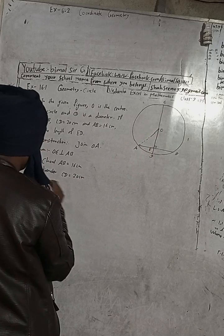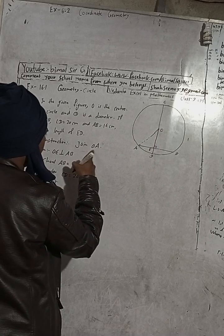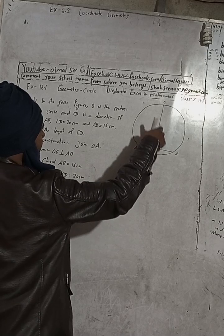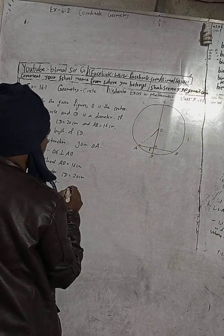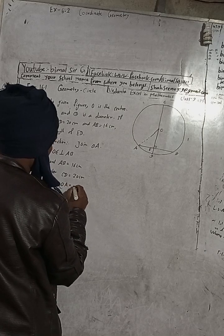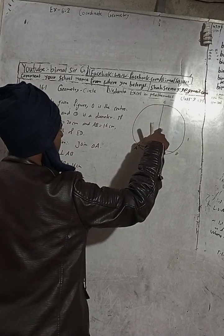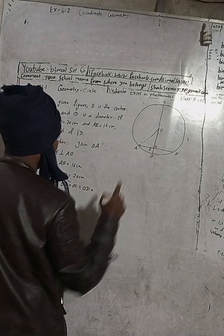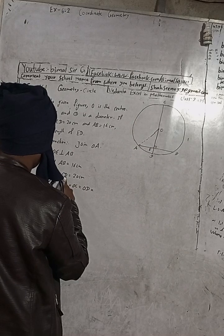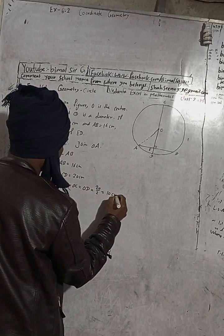We can now write the radius. OA is the radius we joined in the construction. OA is equal to OC is equal to OD, and all are equal to half of the diameter, that is CD divided by 2, which is 20 divided by 2, equal to 10 cm.